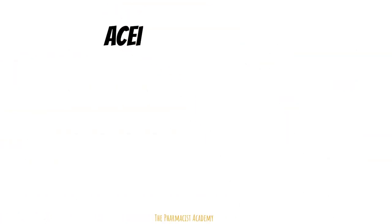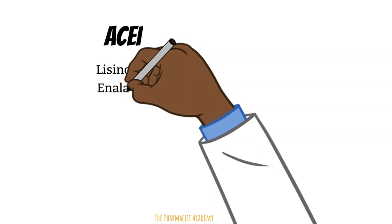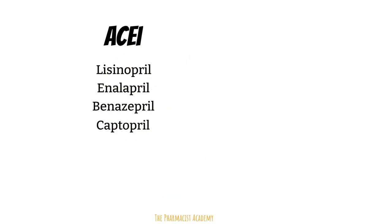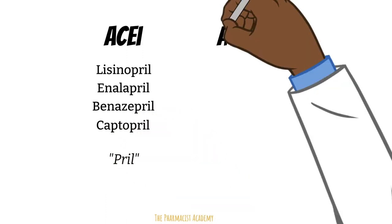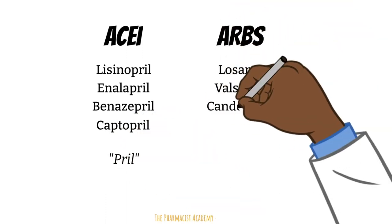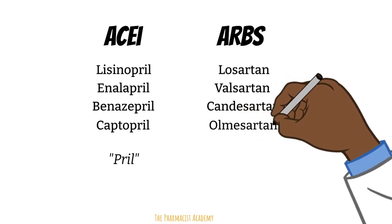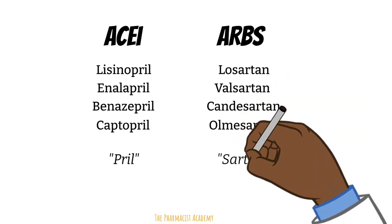Some common ACE inhibitors we see in daily practice are lisinopril, enalapril, benazepril, captopril, and many more. The generic names of these agents all end in -pril. Some common ARBs are losartan, valsartan, candesartan, and olmesartan — and the generic names of these agents all end in -sartan.